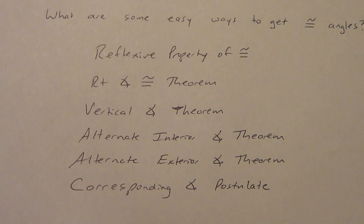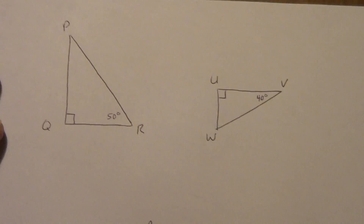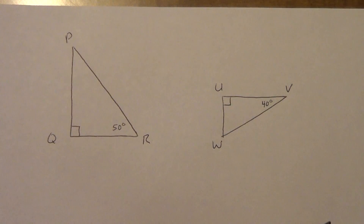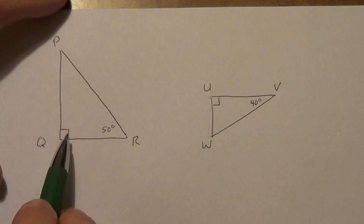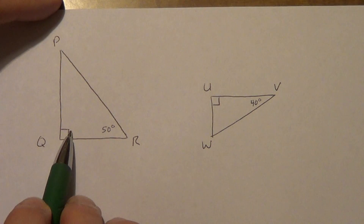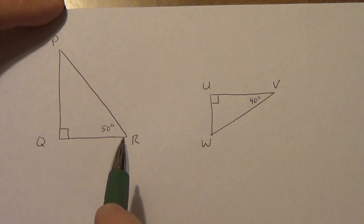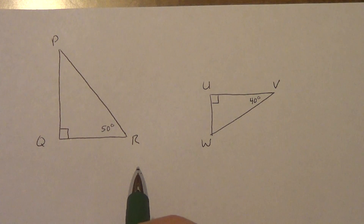Let's look at example one. I've got a right angle mark — perpendicular lines forming right angles. So angle Q is congruent to angle U because of the right angle congruence theorem. I've got a 50-degree angle and a 40-degree angle. 90 plus 50 is 140, and 180 minus 140 gives me 40. So that's a 40-degree angle, so now I've got those matching. We don't need to find the third angle because we only need two congruent angles.